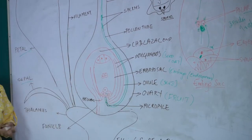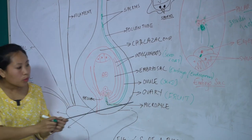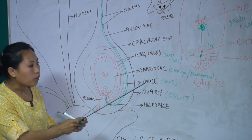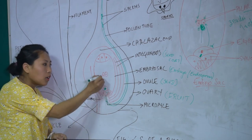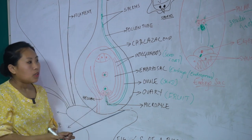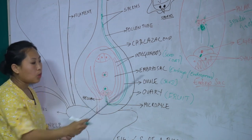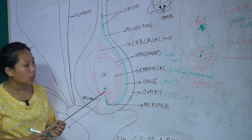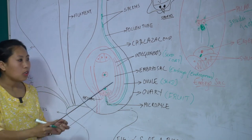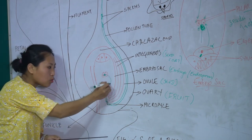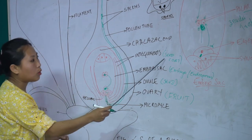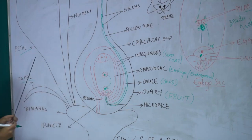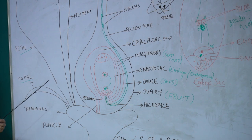Post-fertilization events include the maturation of the ovary into the fruit, the ovary developing into the seed, while the embryo develops into a new individual plant. During germination of the seed, the endosperm provides all its nutrients to the developing embryo, while the integuments develop into the seed coat.